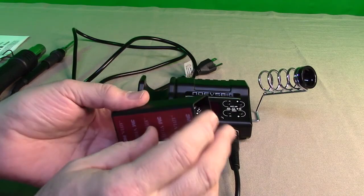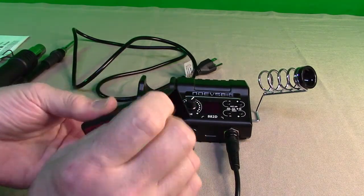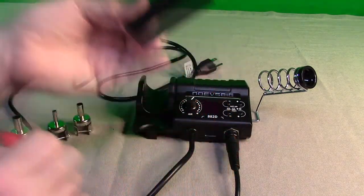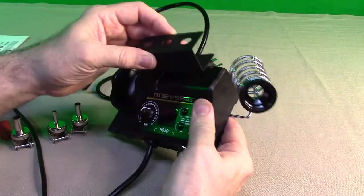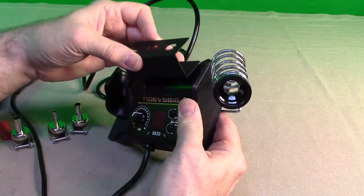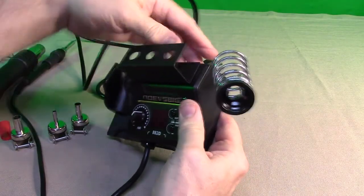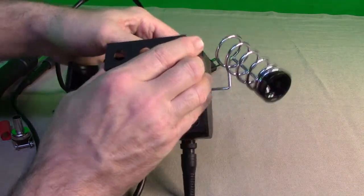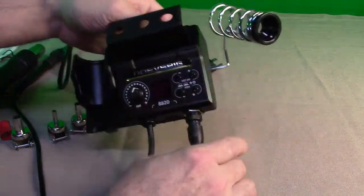I'm going to take the holder which holds the heat gun. I'm going to peel back the 3M and place this on the top right here lined up. Just do it by eye and push down real hard. It holds it right in place like that.